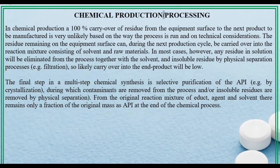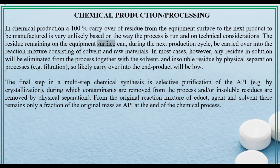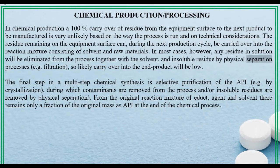Chemical production/processing: in chemical production, a 100% carryover of residue from the equipment surface to the next product to be manufactured is very unlikely, based on the way the process is run and on technical considerations. The residue remaining on the equipment surface can, during the next production cycle, be carried over into the reaction mixture consisting of solvent and raw materials. In most cases, however, any residue in solution will be eliminated from the process together with the solvent, and insoluble residue by physical separation processes such as filtration, so likely carryover into the end product will be low.